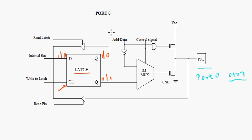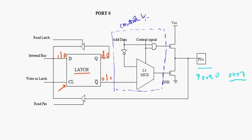This is the control logic. Port 0 of the 8051 has dual functions. Either it can be used for input-output operations or it can be used as a bi-directional low-order address and data bus for external memory, and this control logic decides what it is being used for.